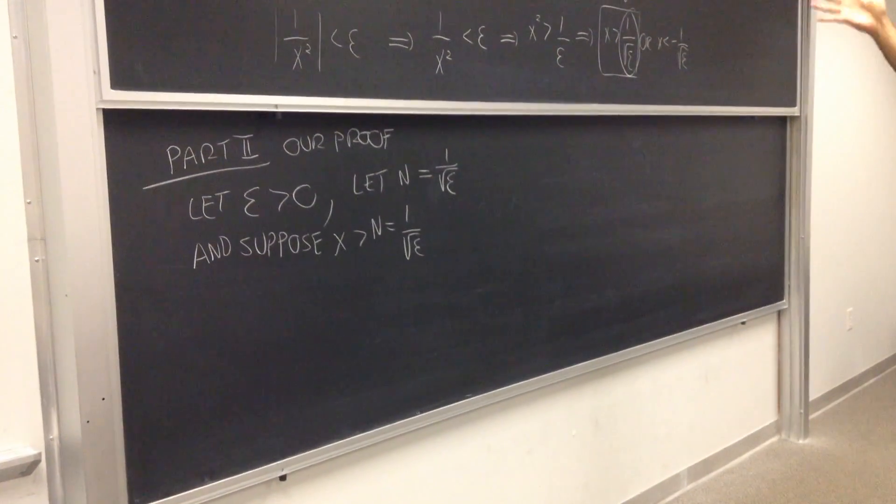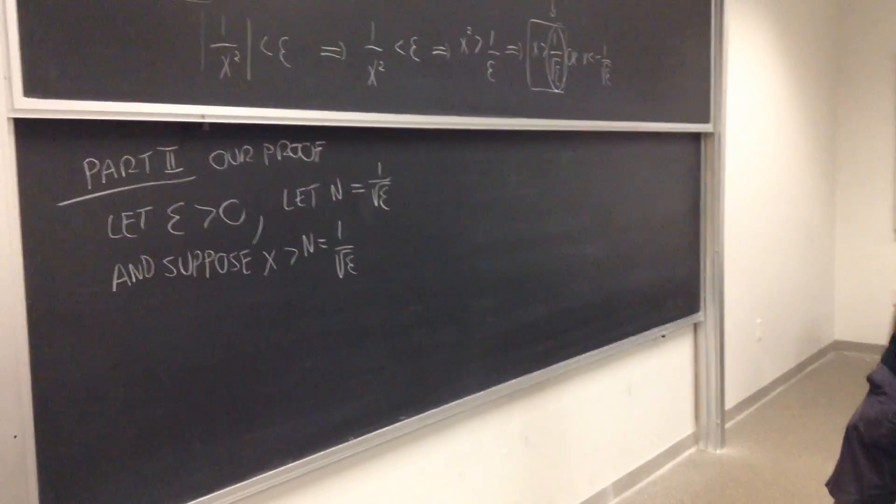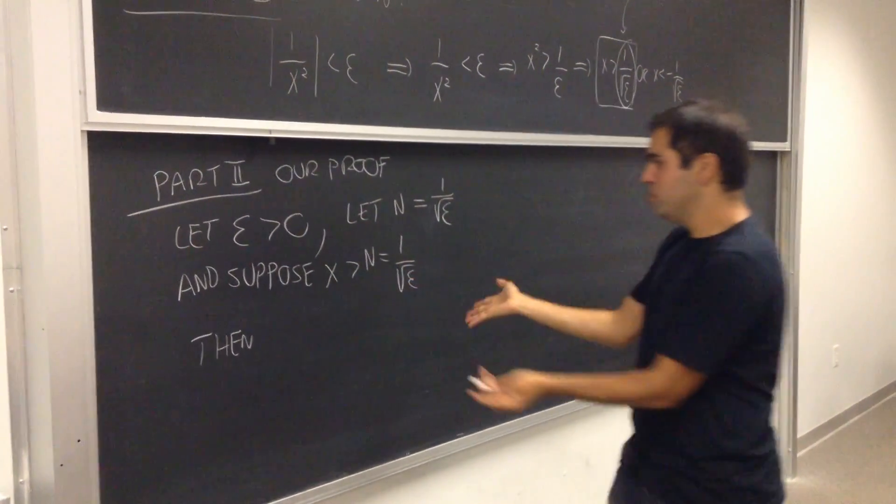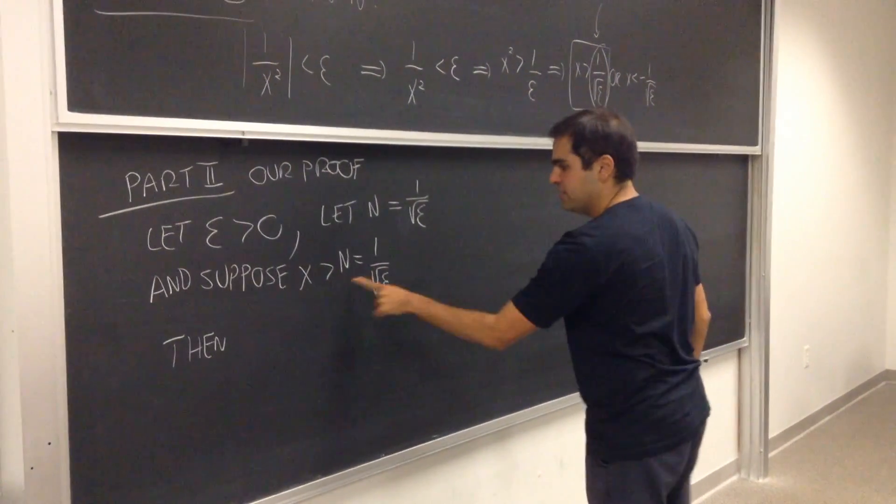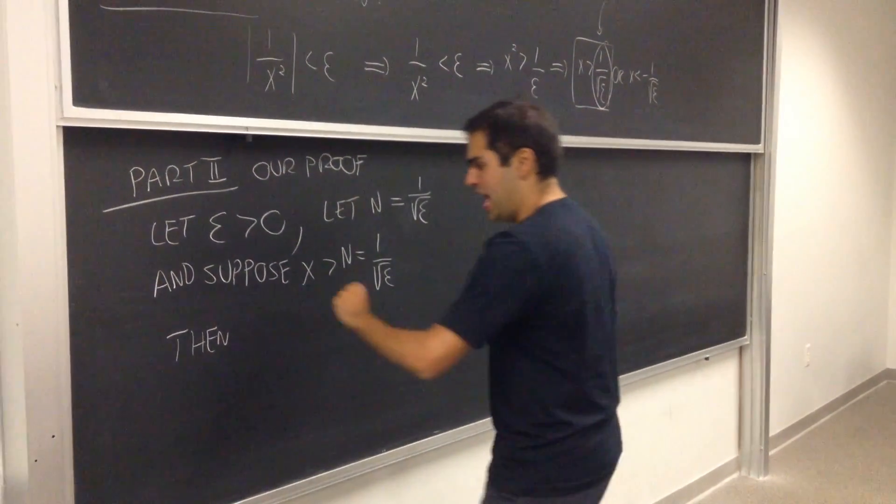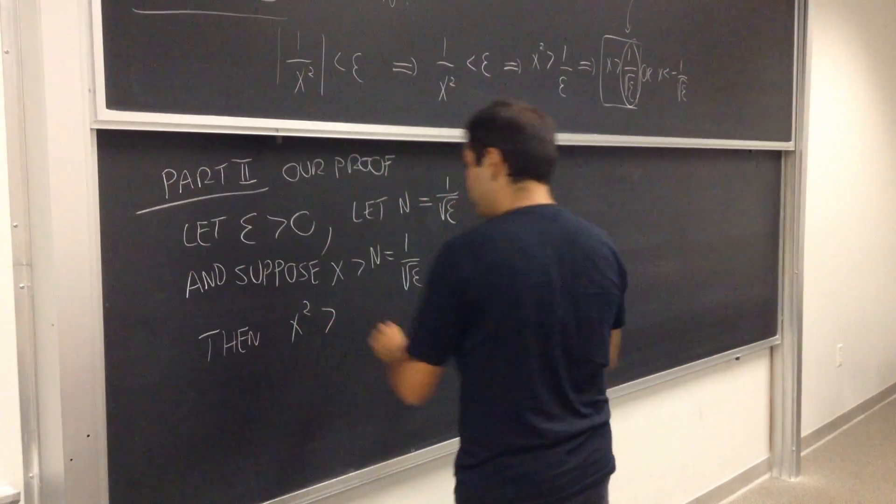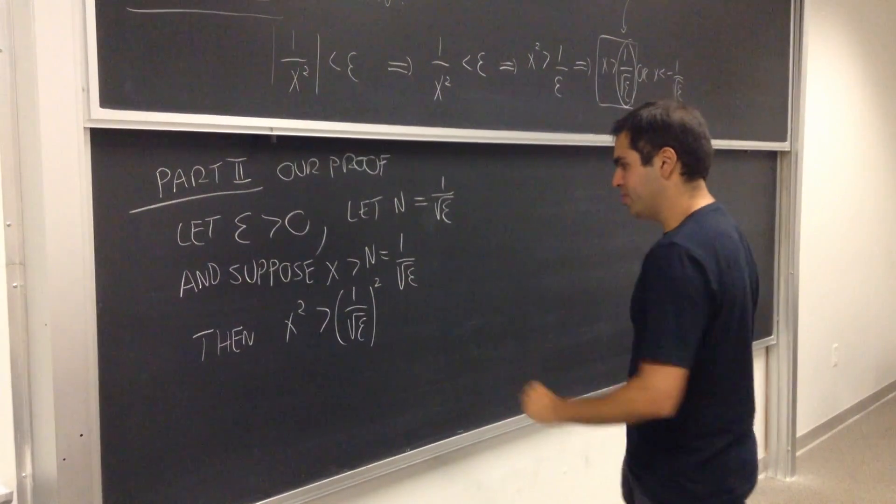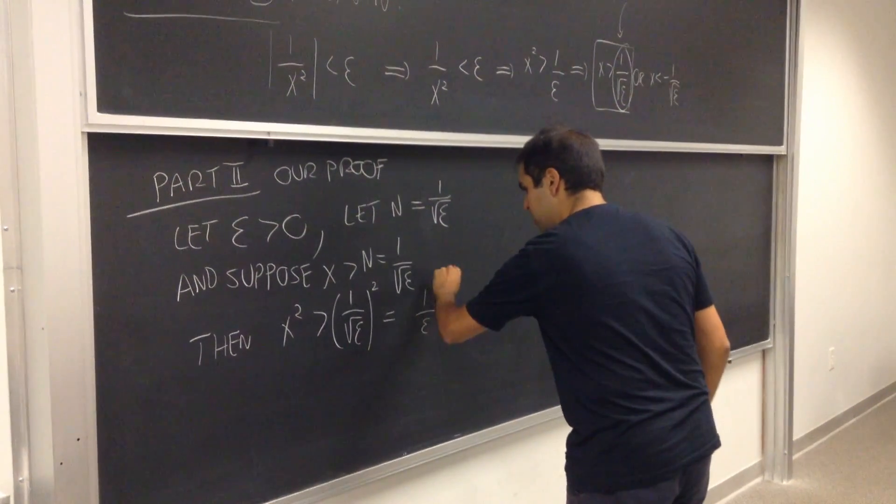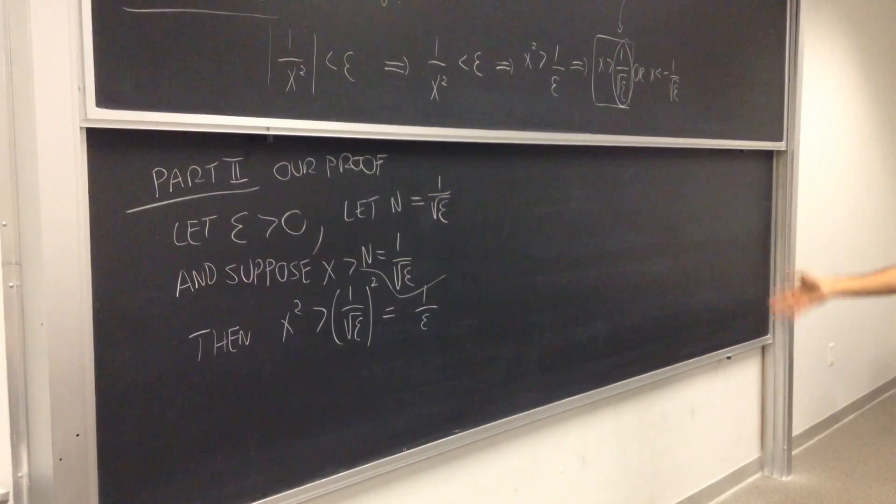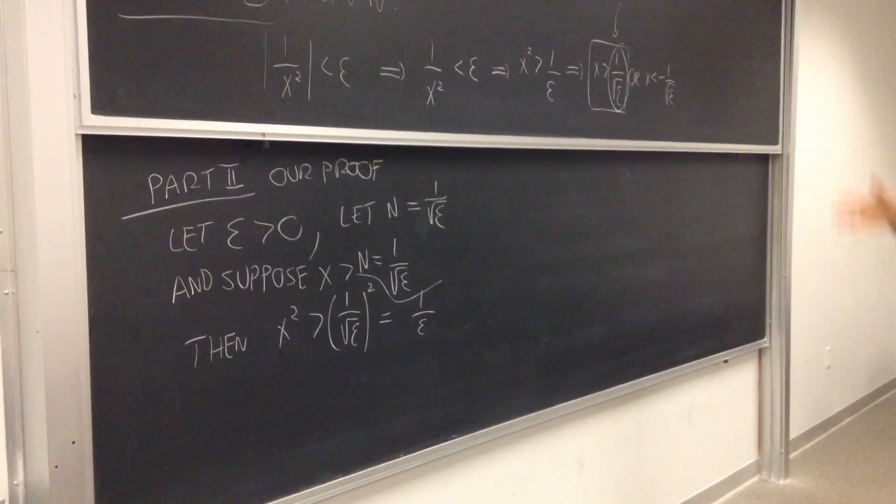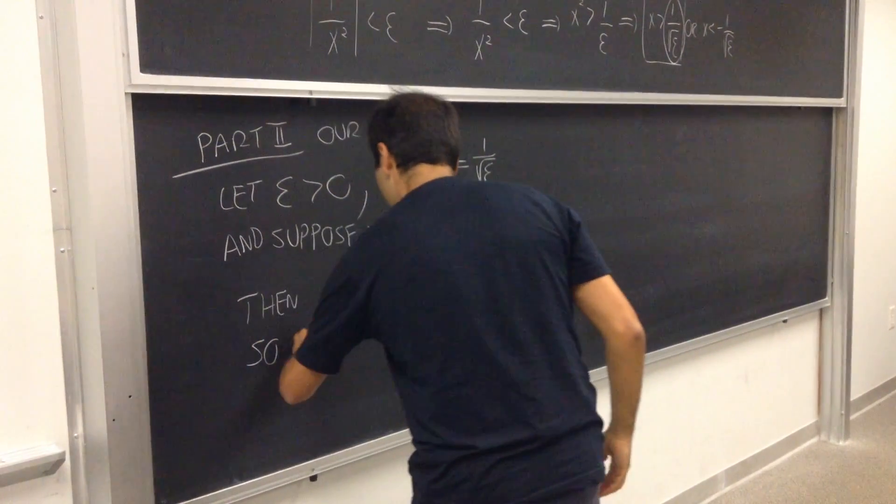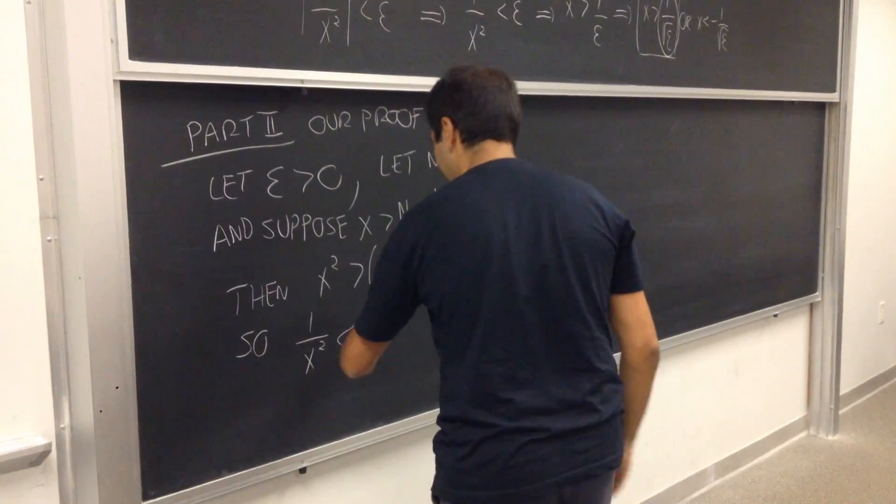And all we want to show is that 1 over x squared is less than epsilon. Then, we can just continue like that. Well, x is bigger than 1 over square root of epsilon. So, x squared, if you square both sides, is bigger than 1 over square root of epsilon squared, which becomes 1 over epsilon. Sorry about that. And then, all you have to do is take the reciprocal, because you want 1 over x squared. So, 1 over x squared is less than epsilon.